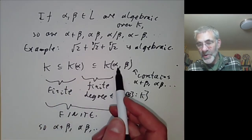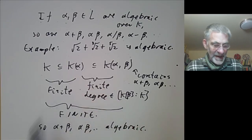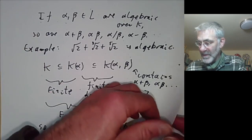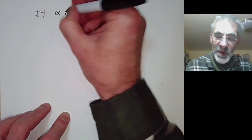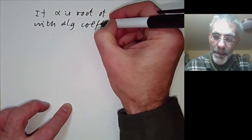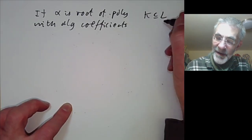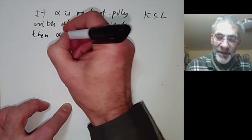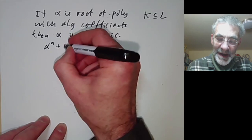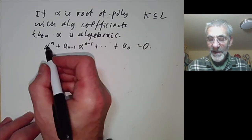I'll just remind you that, although this proof looks almost trivial, if you actually try to unravel it and find the polynomial explicitly, you suddenly discover you're doing some rather tedious and messy linear algebra. There's a similar result where we can show that if alpha is a root of a polynomial with algebraic coefficients over K, then alpha is also algebraic over K. In other words, if αⁿ + aₙ₋₁αⁿ⁻¹ + ... + a₀ = 0 and all the aᵢ are algebraic, then alpha is algebraic.